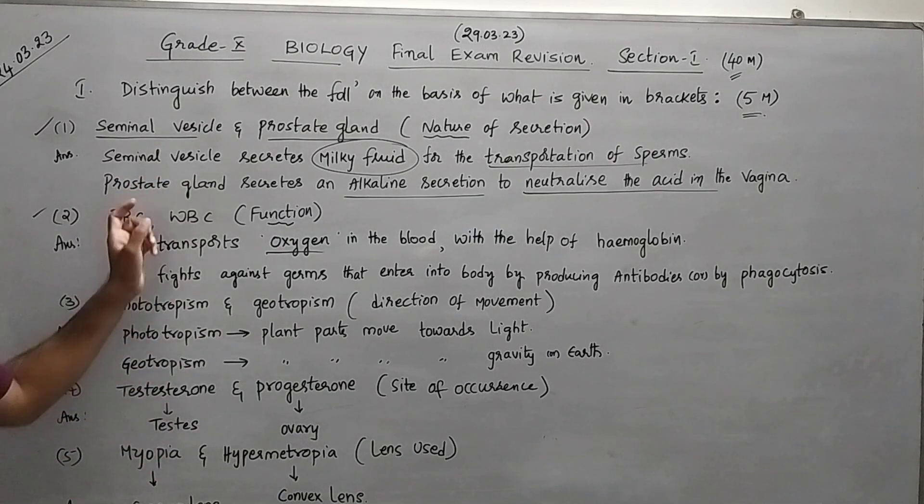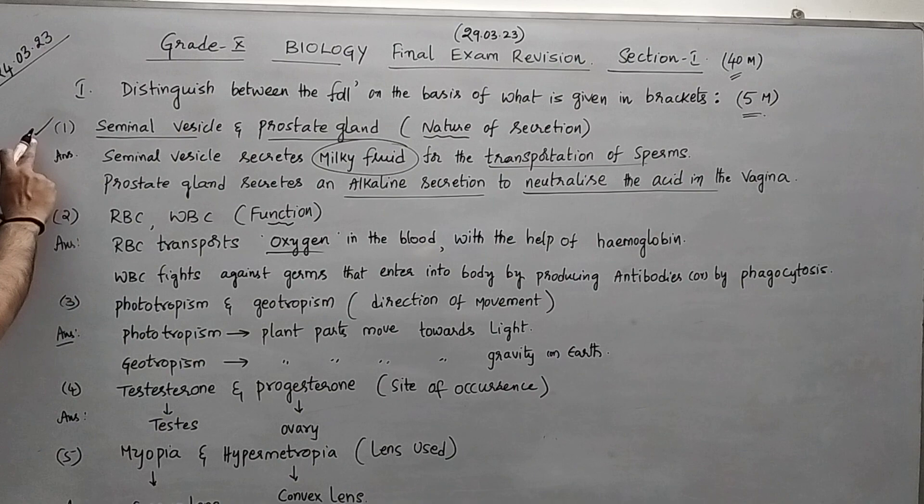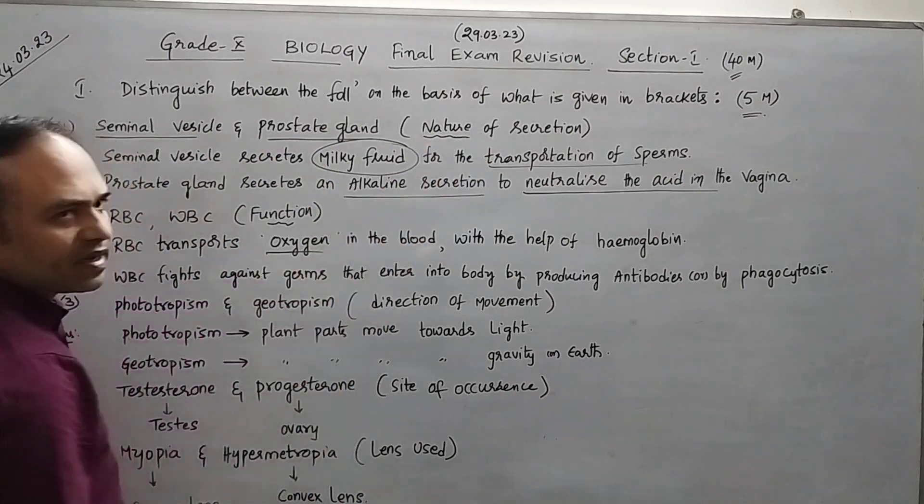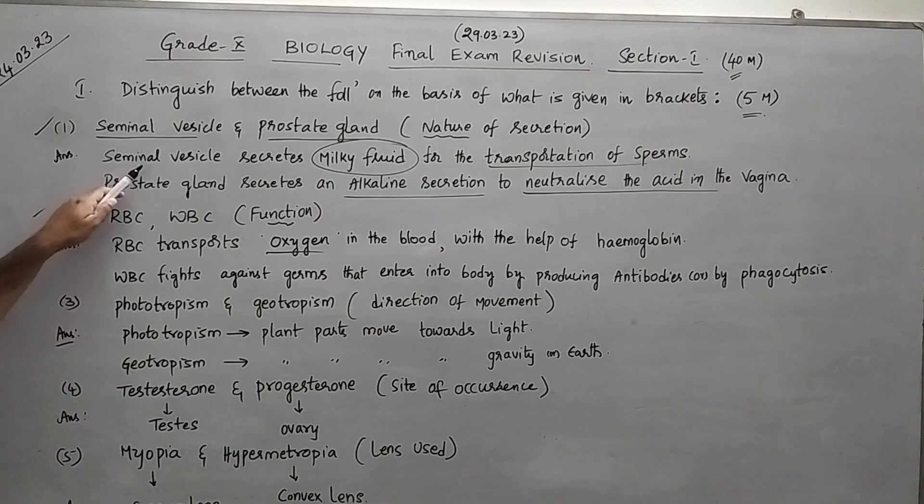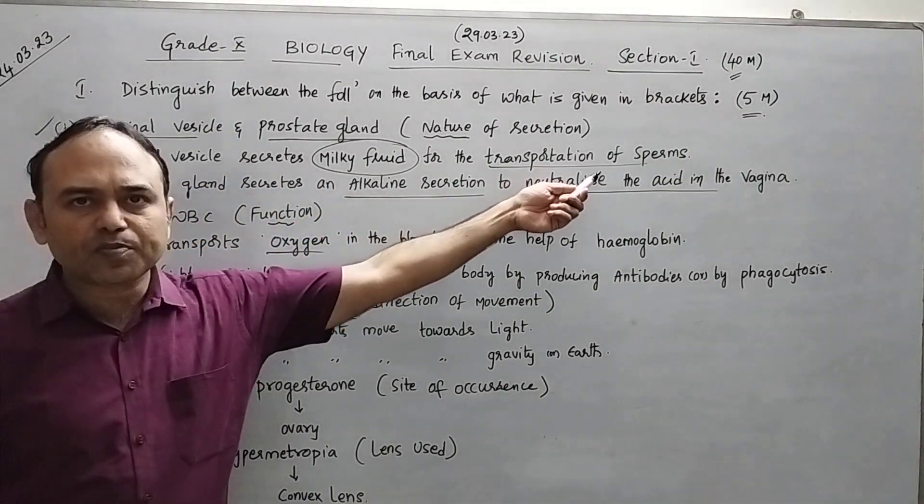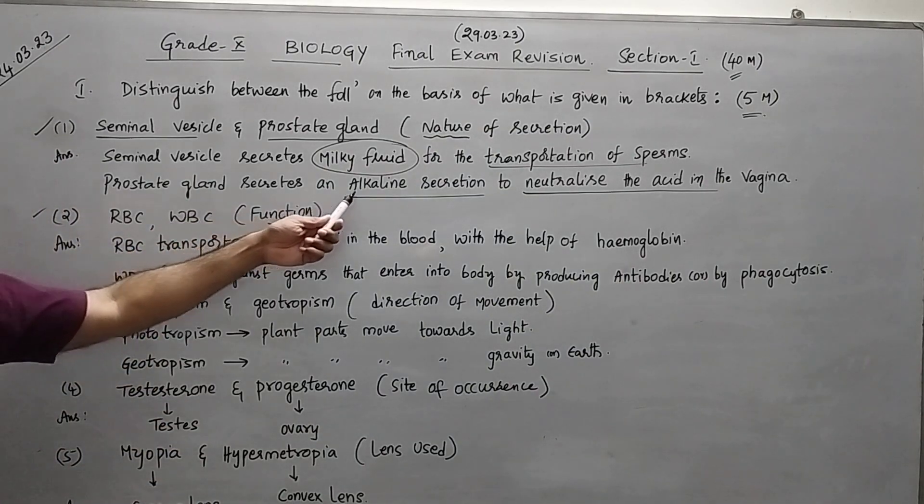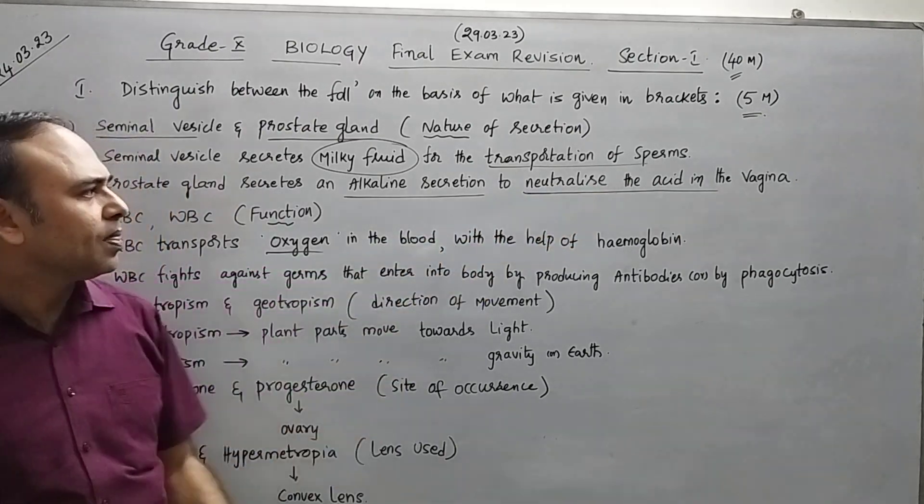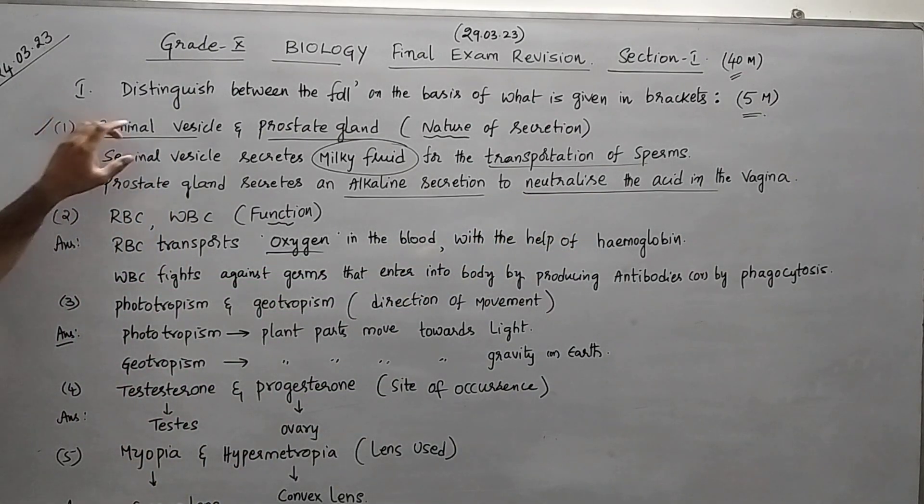Five marks will be given for this. First one is seminal vesicle and prostate gland - what is the nature of the secretion? If you take seminal vesicle, it will secrete milky fluid for transportation of sperms. But prostate gland will secrete alkaline secretion to neutralize acid secreted in vagina. So this is the difference in their nature of secretion.